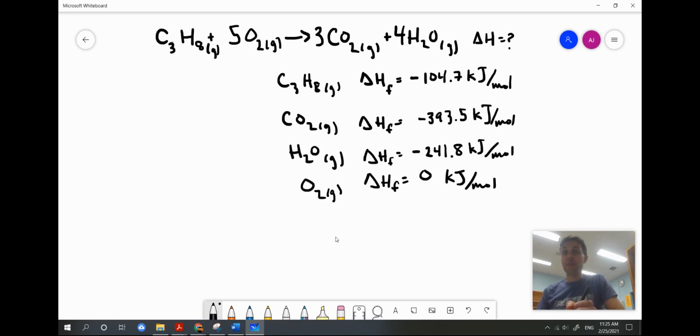I've written out the enthalpies of formation for the four substances involved in this chemical reaction: propane, carbon dioxide, water, and I've included oxygen as well to show how it doesn't play a role. Let's write out the formula now. Let's look at how we substitute our known values into this equation.